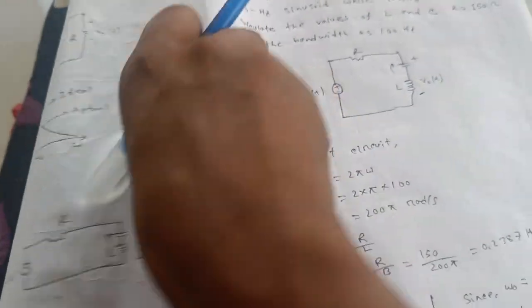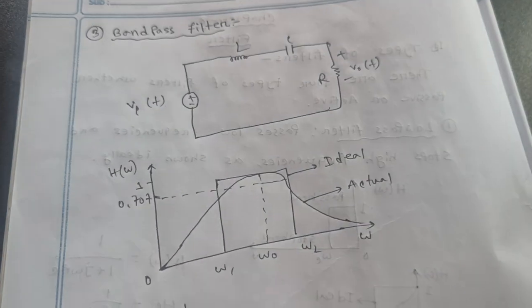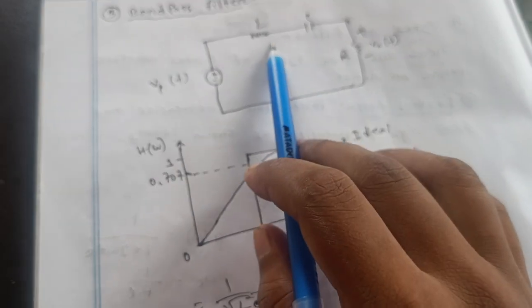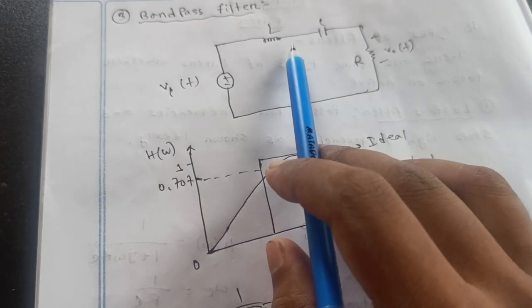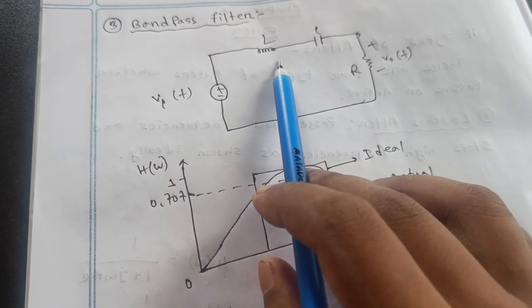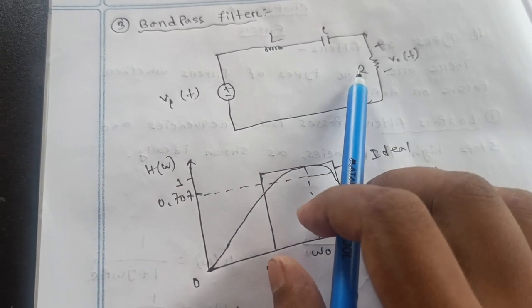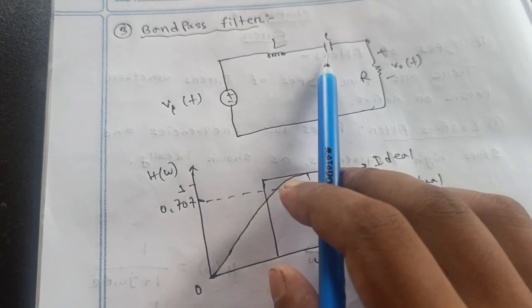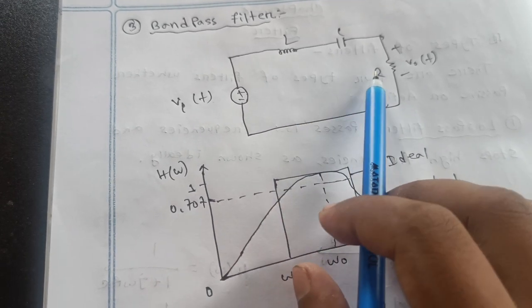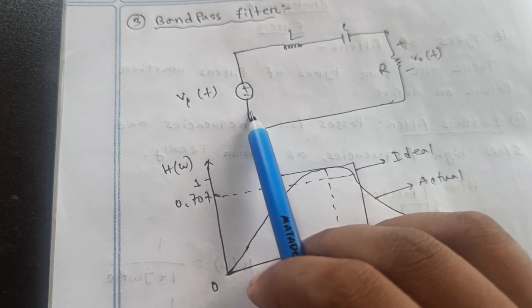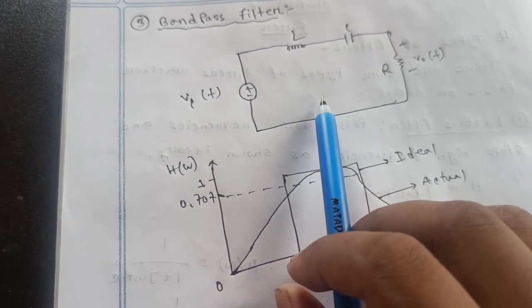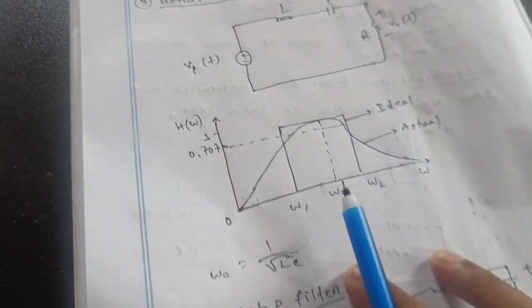Then band pass filter. Number three, band pass filter is nothing but inductor, capacitor and resistor. Inductor L, capacitor C and resistor R. That means voltage current plus positive plus negative.